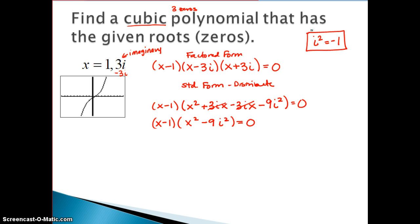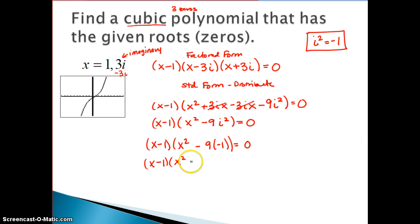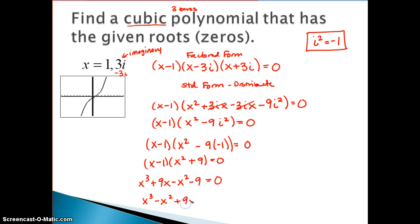So I have x minus 1 and x squared. The negative 9i squared becomes negative 9 times negative 1. It's multiplication — not addition or subtraction. Simplifying, I get x squared plus 9 equals 0. Still not fully distributed: x times x squared is x cubed, x times 9 is 9x, negative 1 times x squared is negative x squared, and negative 1 times 9 is negative 9. Written in standard form — highest exponent down to the constant — this is my cubic polynomial answer.